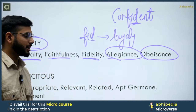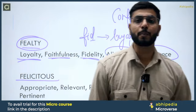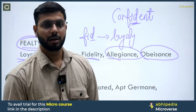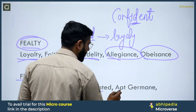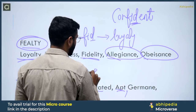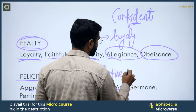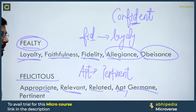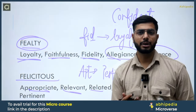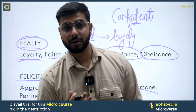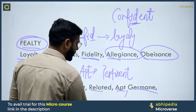The next word is Felicitous. Felicitous का मतलब होता है Appropriate — pertinent, relevant, related, apt, germane. Pertinent means important/relevant/appropriate. Germane also means important or relevant. So Felicitous = appropriate, relevant, pertinent, apt, germane.